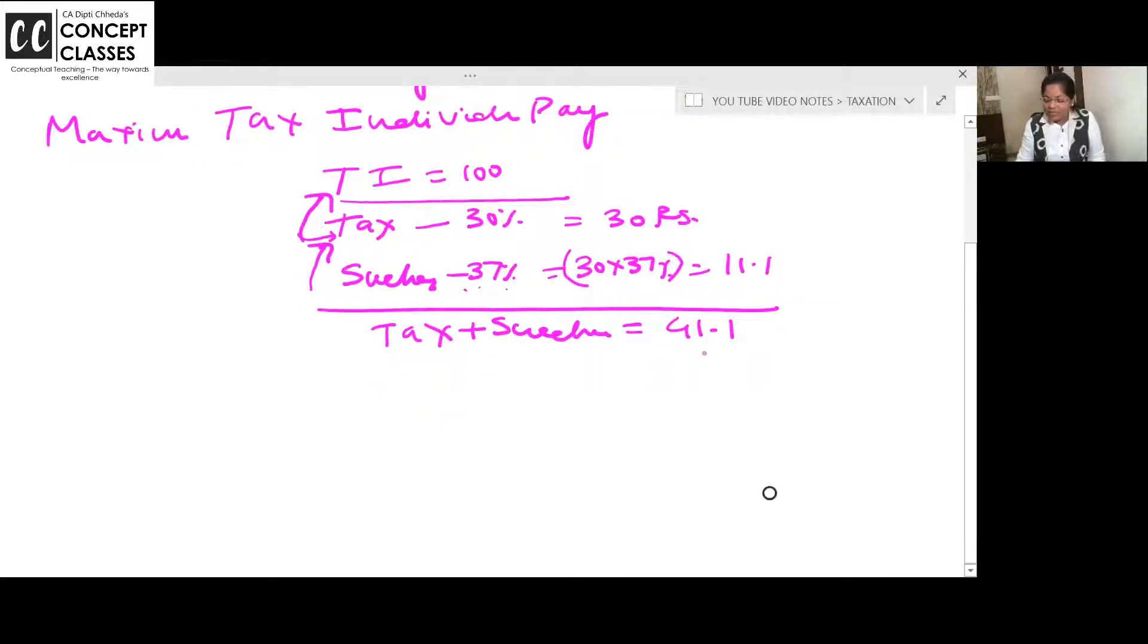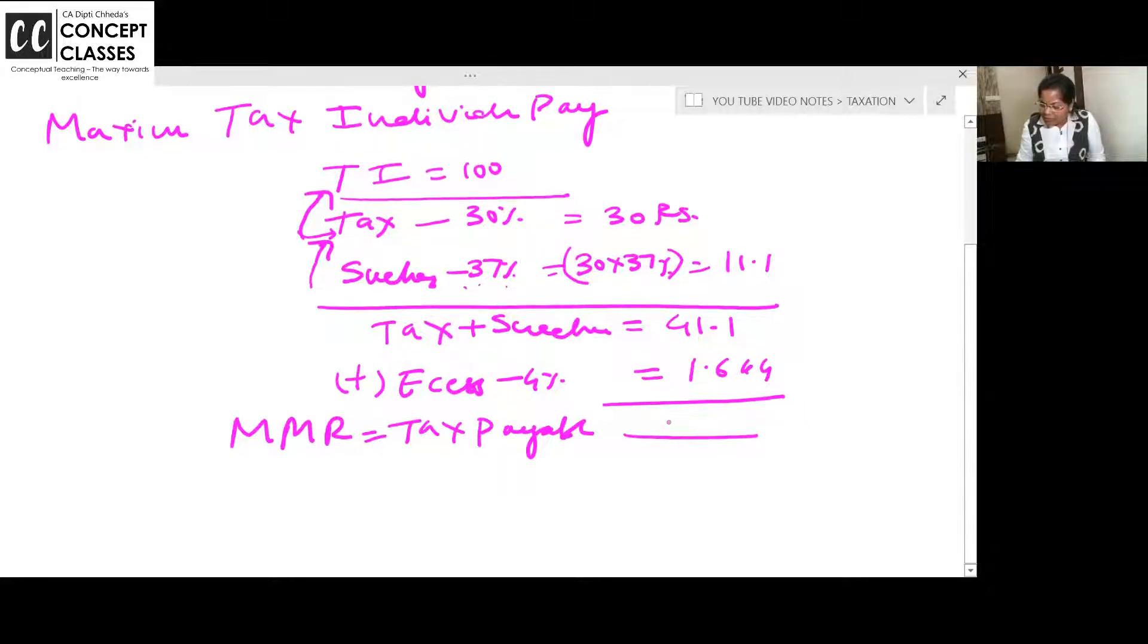Tax plus surcharge is 41.1. And education cess you have to pay at the rate of 4%, either on tax, and if surcharge is there, on tax plus surcharge both. So on 41.1, 4% - 1.644% is your ESS. So what is your maximum marginal rate of tax you have to pay or tax payable? 42.744%.